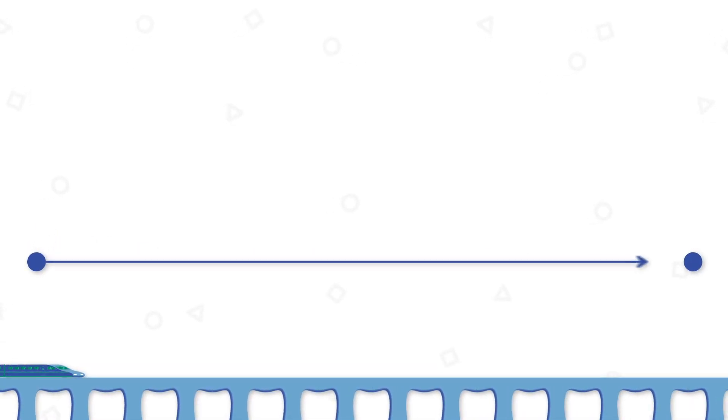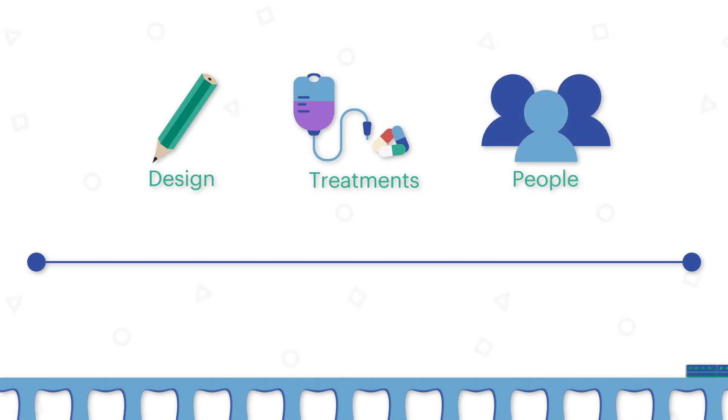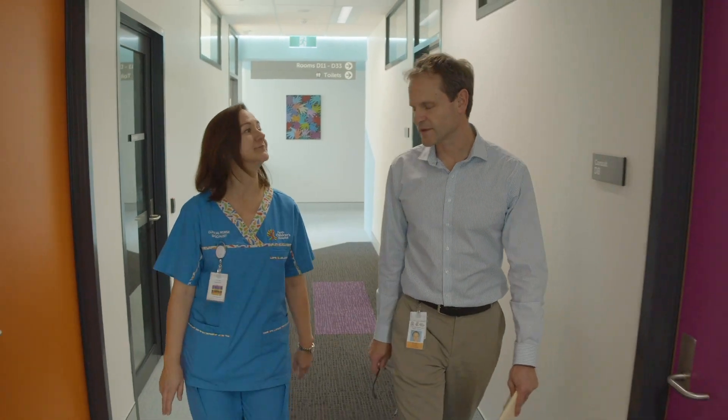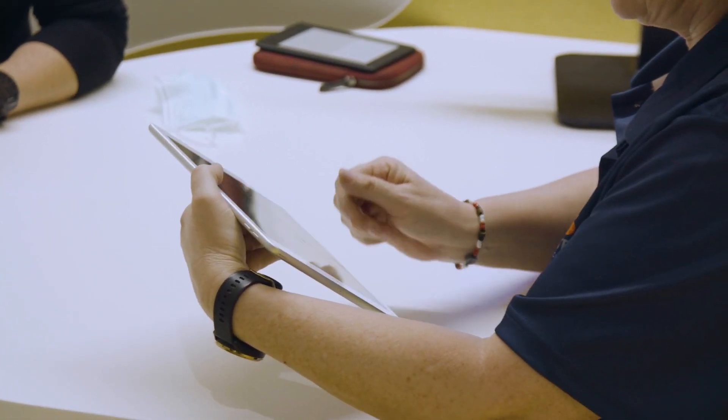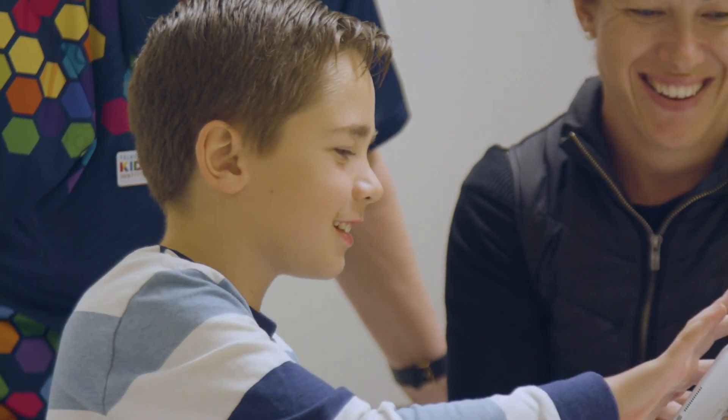Regular clinical trials run a bit like trains on train tracks. Everything is pretty much fixed from the beginning to the end. The design, the treatments you offer, and how many people you will enroll are all locked in before the first person is enrolled. You do the trial and then you look at the data at the end to see if you've answered your question. Sometimes the trial fails to reach an answer because we have had to make assumptions or guesses about the patients and their responses to treatment, and those guesses have turned out to be wrong.